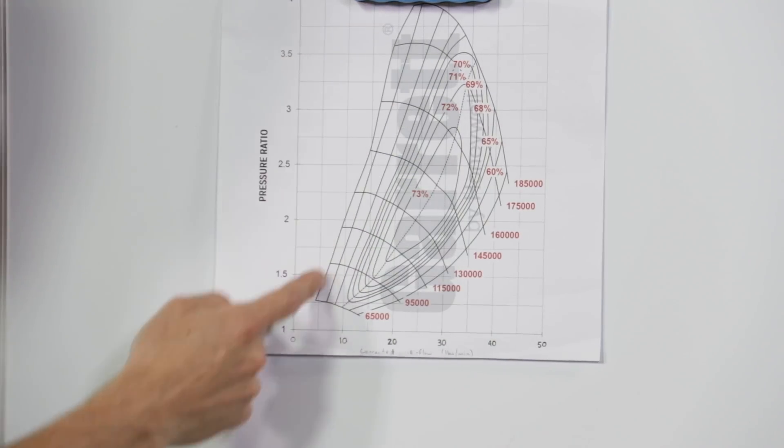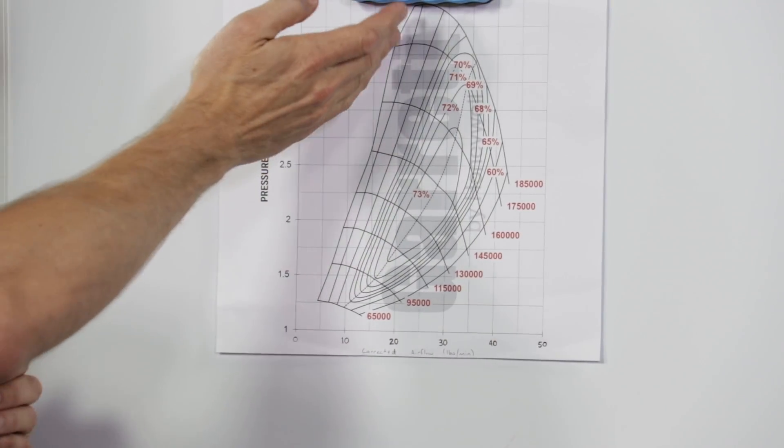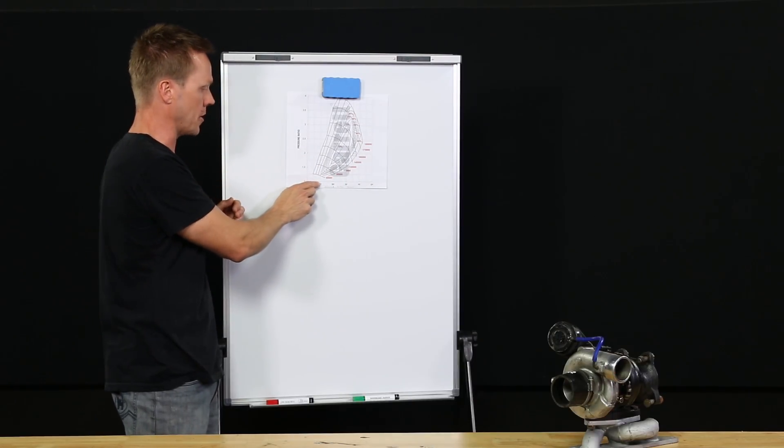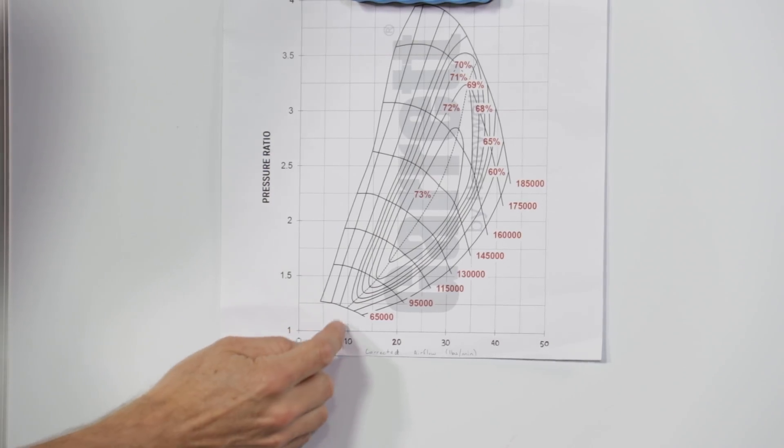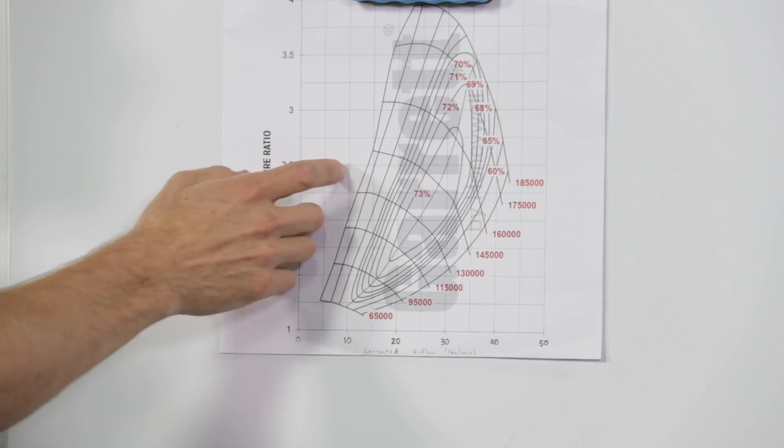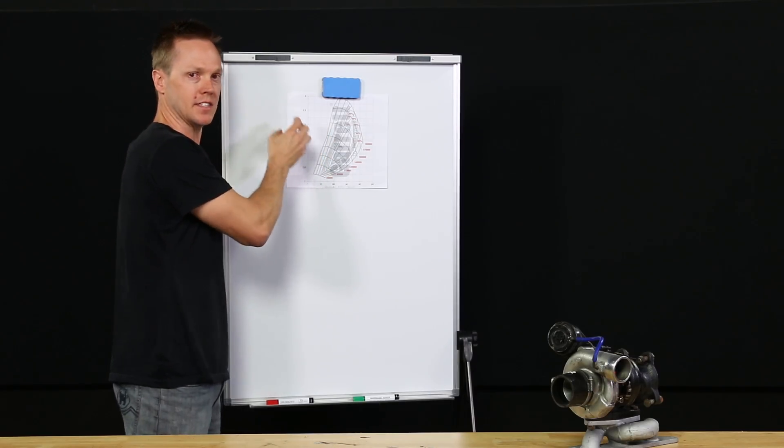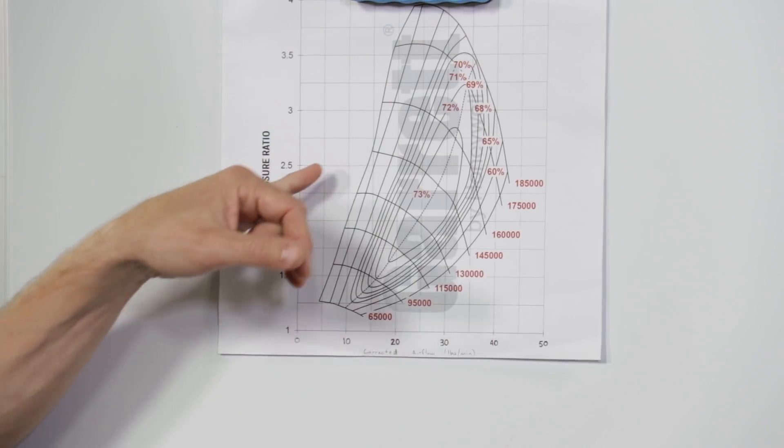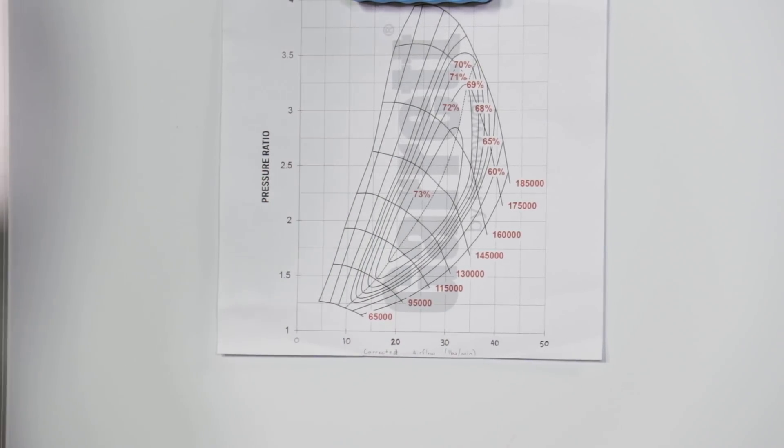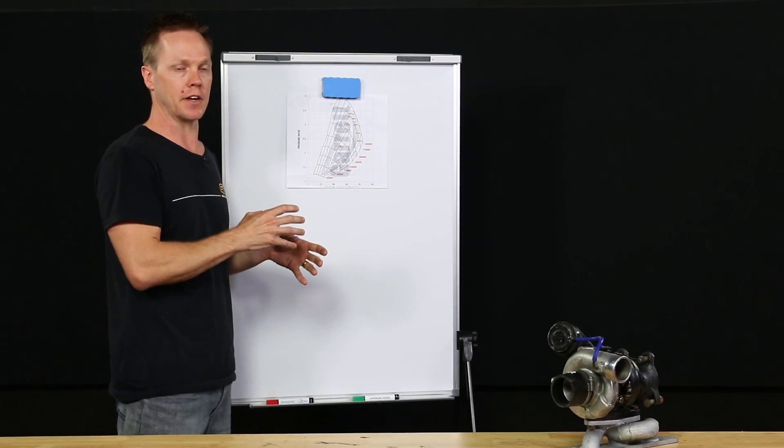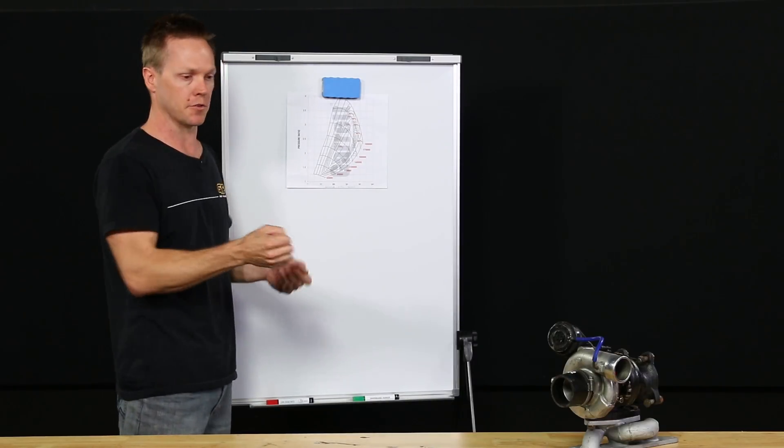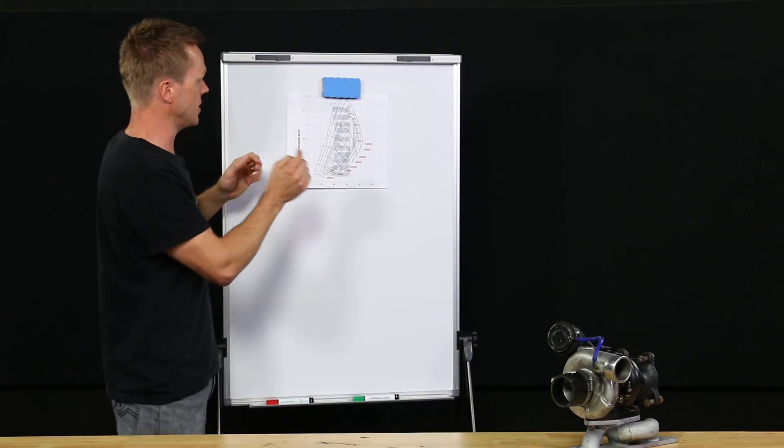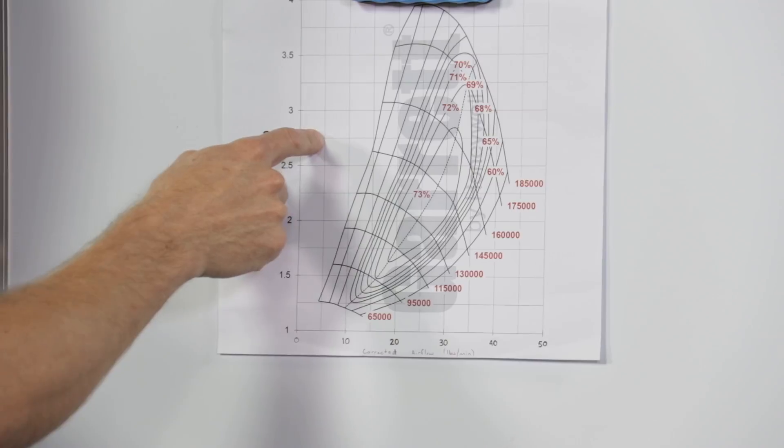So the next thing to look at is the surge line. So this is basically the operating threshold for your turbo. So for example, if we were operating at 10 pounds per minute and we go up here and we're using a pressure ratio of 2.5, we're actually operating in surge. So that means if your car was accelerating and operating in this area here, it would actually be compressor surging. It would be making the horrible fluttering noise and it would be flogging on the thrust bearings and doing all sorts of nasty things. And the boost would be going all over the place. So ideally, you don't want to be operating in this region here.